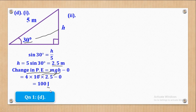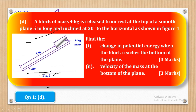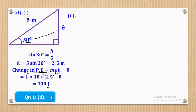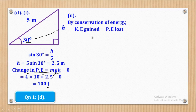For Roman 2, to find the velocity at the bottom of the plane, we use the principle of conservation of energy: kinetic energy gained equals potential energy lost. KE gained = ½mv², and since the block started from rest the initial KE is zero. The potential energy loss equals 100 J from our previous calculation.